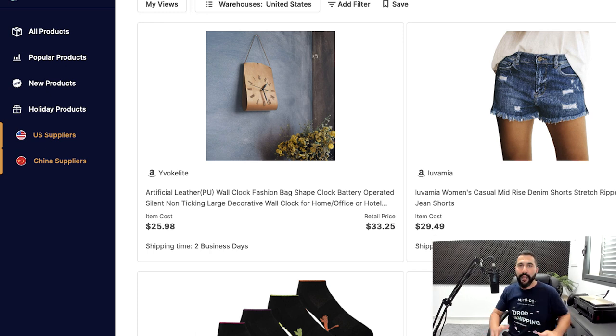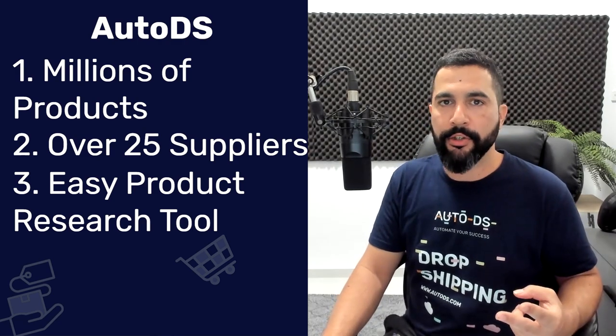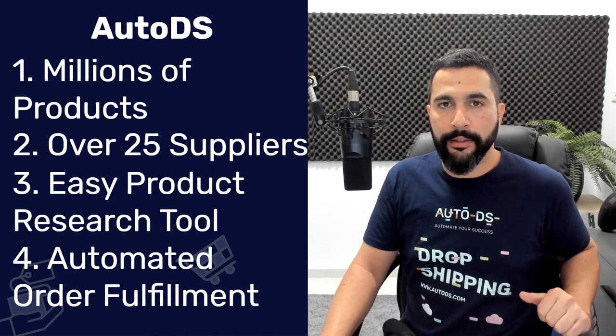Soon AutoDS will also be adding wholesale private dropshipping suppliers to the product research section, meaning only AutoDS members will have exclusive access to products that no one else has access to. You can also play with variations however you like — create one product listing, add its variations, then add more variations from other suppliers and even other regions to the same product page, making your listing unique and differentiating yourself from the competition.